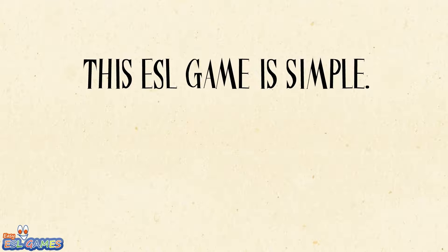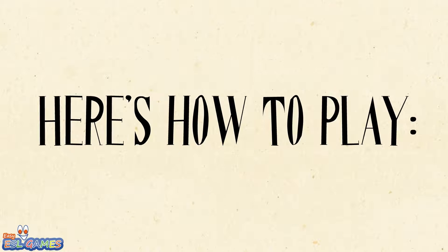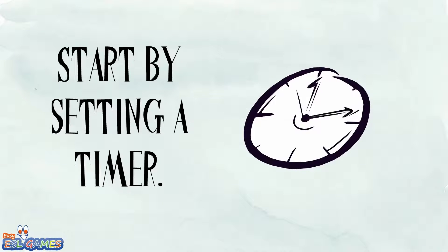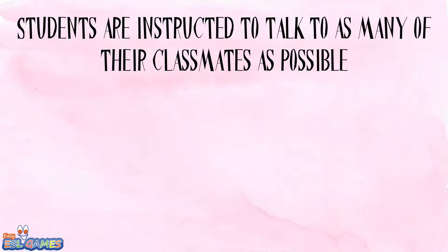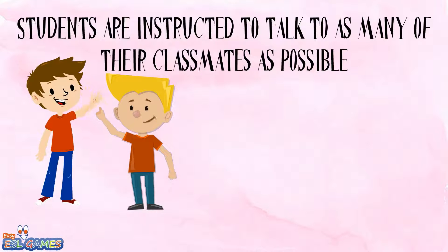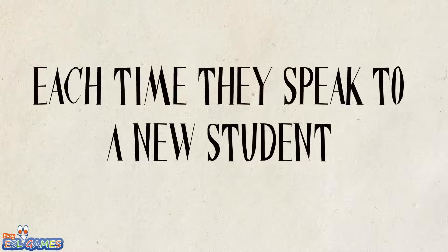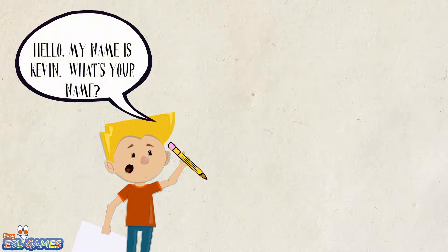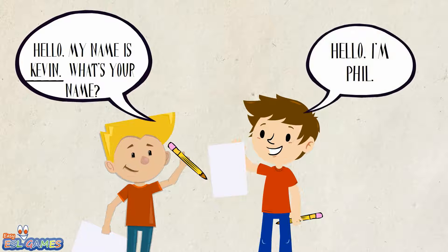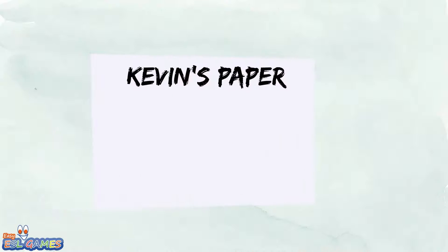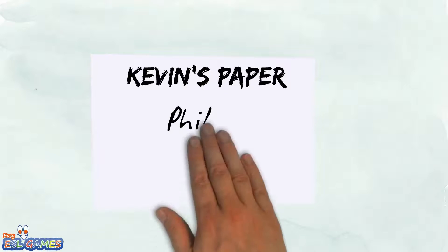This ESL game is simple. Here's how to play. Start by setting a timer. Students are instructed to speak with as many of their classmates as possible within the given timeline. Each time they speak to a new student, they are required to use the simple dialogue they're practicing. After completing the language objective, both students write their names on each other's pieces of paper, then quickly look for new partners and repeat.